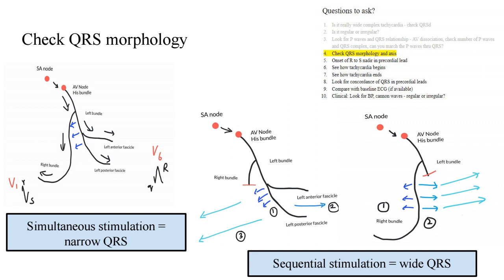In left bundle branch block, a left-to-right septal depolarization is not seen as in RBBB or normal cases. What happens first is initial right ventricular depolarization via the intact right bundle. Thereafter, there is aberrant and slow septal conduction through the muscle of the septum because the left bundle is blocked. This is followed by a slow advancing depolarization first over the septum and then through the left ventricle. This sequential stimulation is what takes place in left bundle branch block.